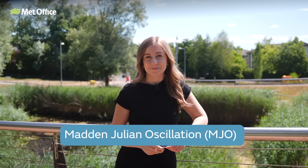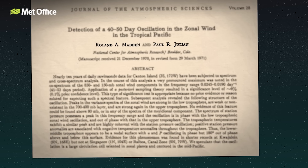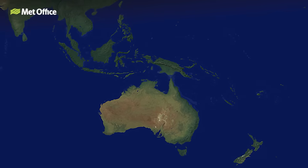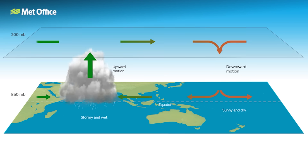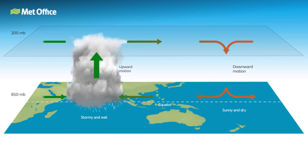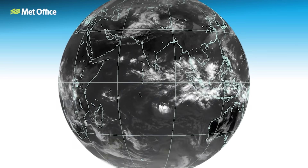The Madden-Julian Oscillation. While climate patterns like ENSO and the IOD influence weather over months, others can bring changes much more quickly. One of the most important short-term drivers we monitor is the Madden-Julian Oscillation, or the MJO, discovered in 1971 by Dr. Roland Madden and Dr. Paul Julian for the American National Center for Atmospheric Research, or NCAR. The MJO was identified when they were studying tropical wind and pressure patterns and noticed regular oscillations in winds between Singapore and Canton Island in the west-central equatorial Pacific.